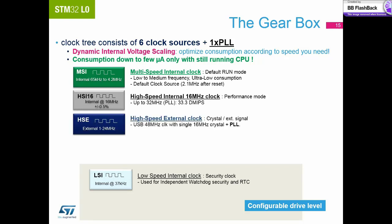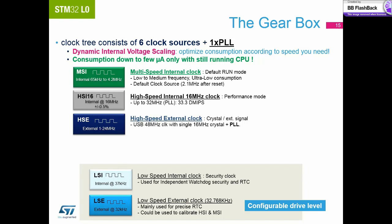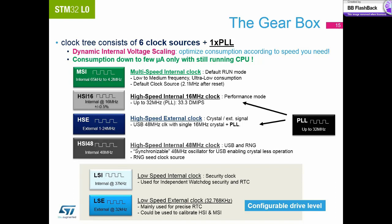Then we have the two external clock sources. High speed for running the device at full speed and to generate via PLL the 48MHz required for the USB. And low speed to provide an accurate clock source for the RTC. And finally, we have the HSI48. This clock has been designed so you can run the crystal-less USB and also generate the clock source for the random number generator.